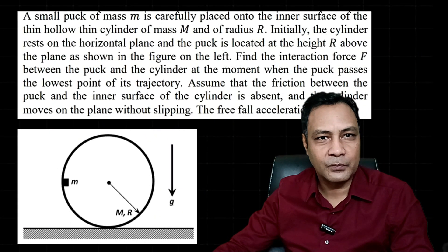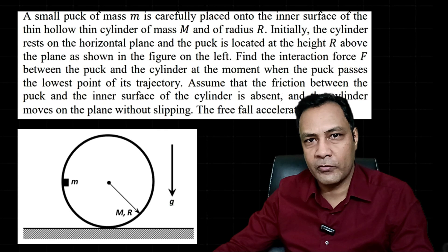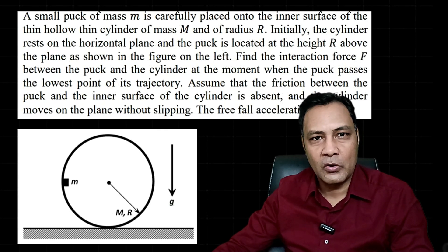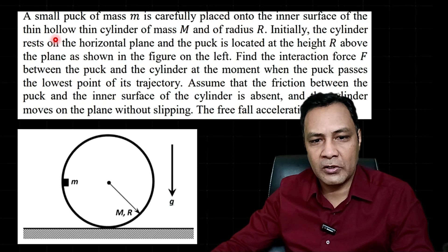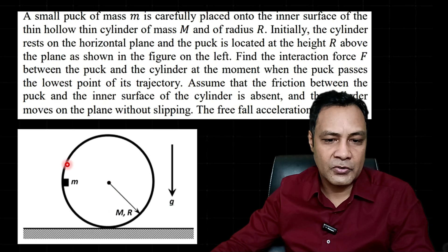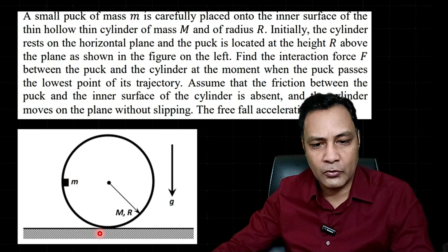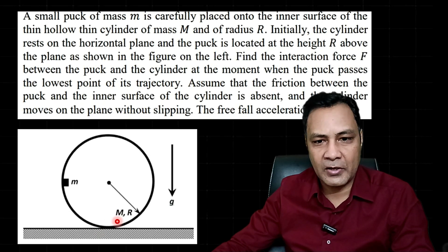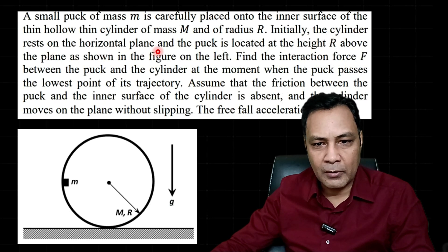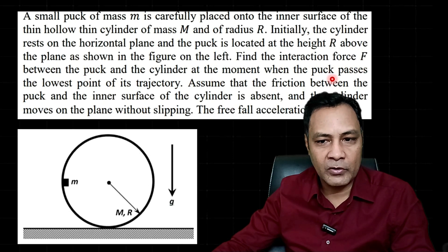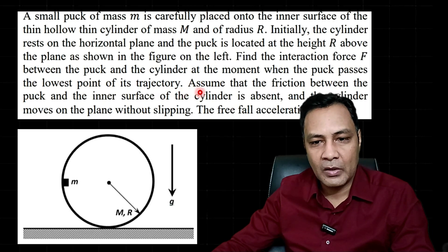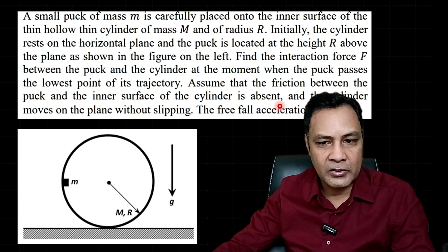Hey all, this is Prajish Shodhye of Quantum Group. In this video I'll take up another challenging problem of rigid body dynamics from IPhO 2014. The question states: a small puck of mass m is carefully placed onto the inner surface of a thin hollow cylinder of mass M. The hollow cylinder has mass M and radius R. Initially the cylinder rests on the horizontal plane and the puck is located at a height h above the plane. Find the interaction force between the puck and the cylinder at the moment when the puck passes the lowest point of the trajectory. Assume friction between the puck and the inner surface of the cylinder is absent, and the cylinder moves on the plane without slipping.